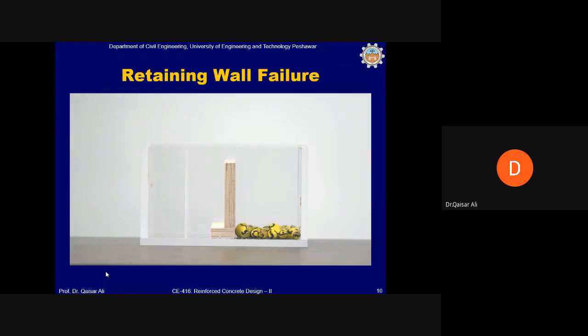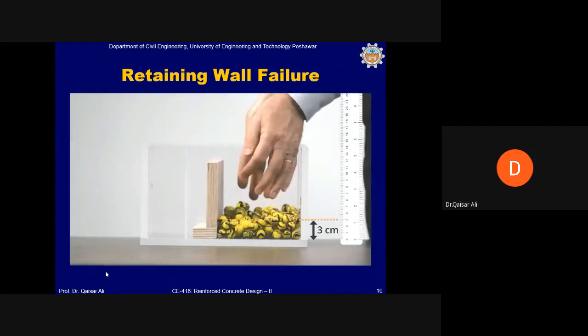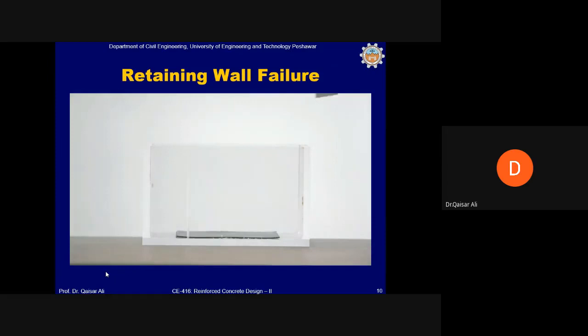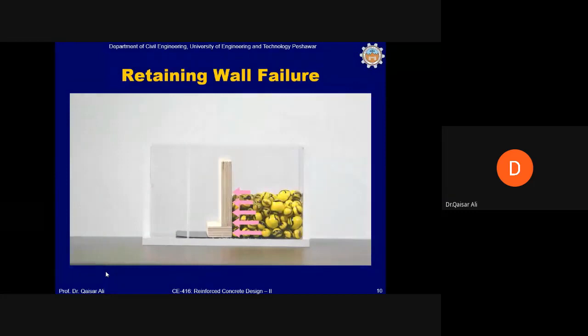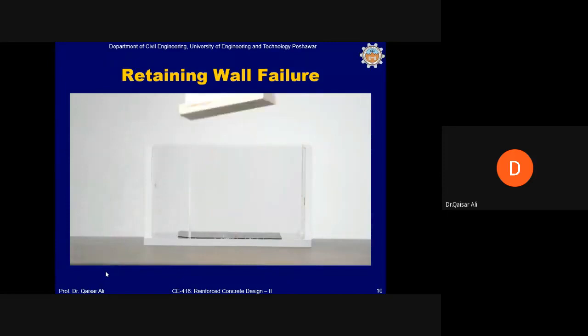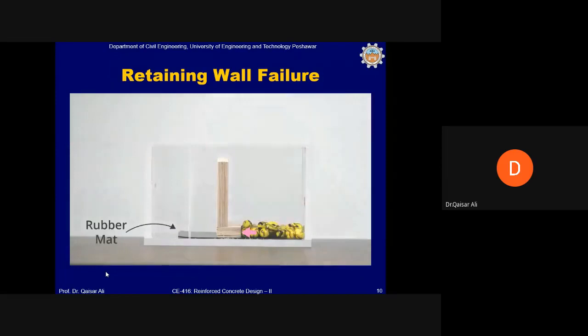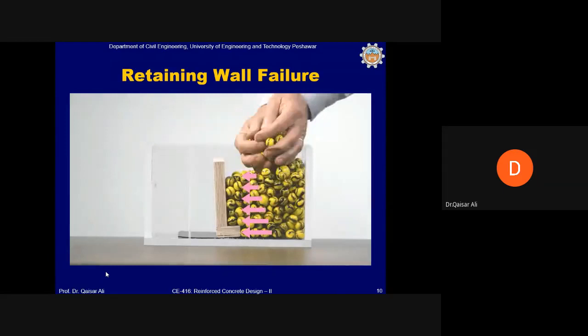Many people would orient the base of the L away from the soil, making overturning difficult. However, when the bottom leg points away from the marbles in the model, the horizontal forces produce sliding failure when marble depth reaches 3 cm. Adding a rubber mat to increase friction allows a noticeably greater depth of marbles but still results in overturning at 8 cm depth.